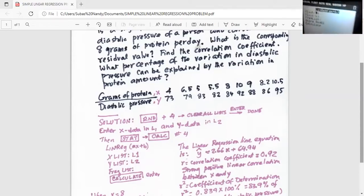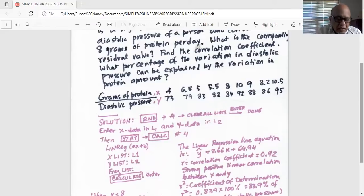Our X list is L1, Y list is L2, frequency list is empty, and we scroll down to CALCULATE and hit ENTER. So we get the linear regression line equation, which is Y hat equal to 2.66, which is our slope times X plus B, which is our intercept, which is 64.94.